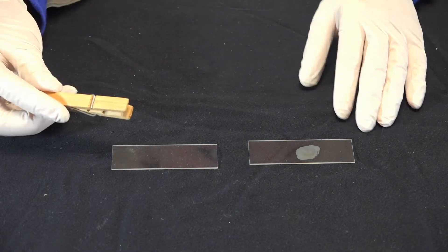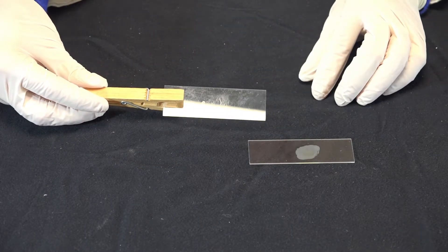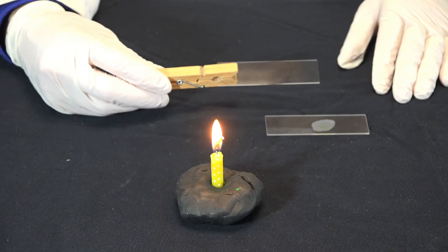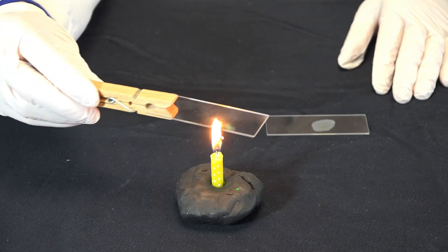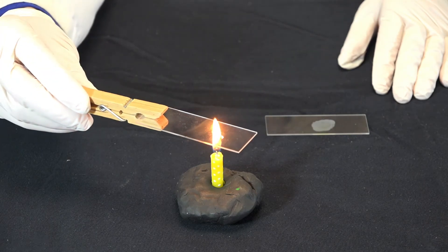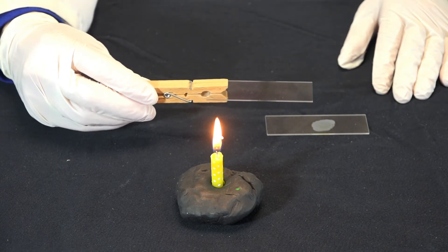To protect my hands when heat-fixing, I'm going to use a clothespin to hold the slide. I'll heat-fix this slide using the flame. With the smear side up, pass the slide over the flame three or four times. If anything accumulates on the bottom of the slide, you can just wipe it off.